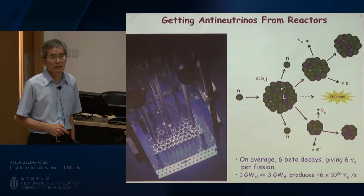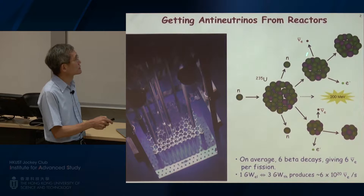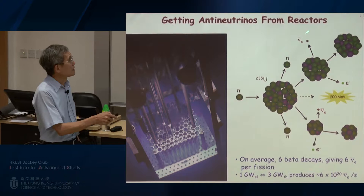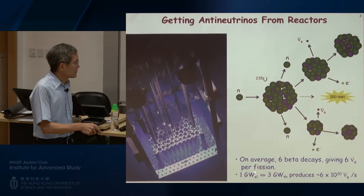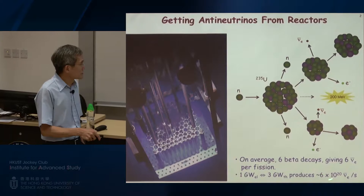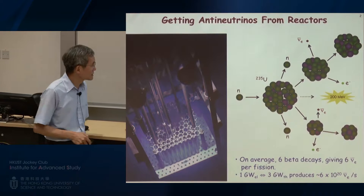Subsequently we produce other short-lived radioisotopes that can essentially decay right away through beta decay, giving us the electron along with the electron antineutrino. For a typical reactor that can generate about one gigawatt of electricity, it can produce 6 times 10 to the 20th antineutrinos per second. This is extremely intense, and it's because of this abundance of antineutrinos that we can do experiments.